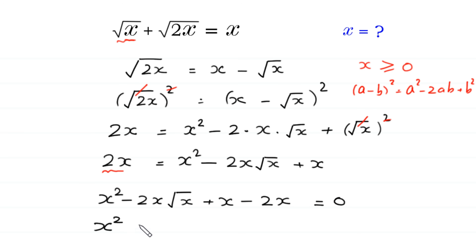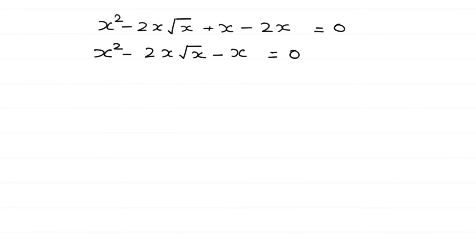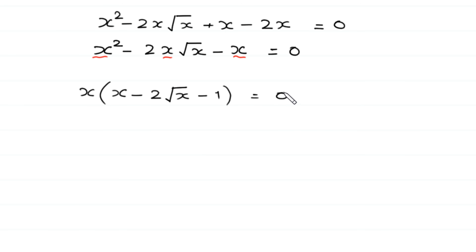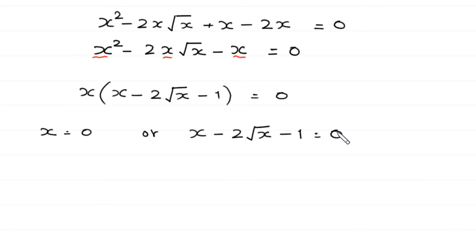Next, x squared minus 2x times square root of x plus x minus 2x gives x squared minus 2x times square root of x minus x equals 0. As you can see, we can factor out x from this expression: x times in bracket x minus 2 times square root of x minus 1 equals 0. From here, either x equals 0, which is the first value of x.